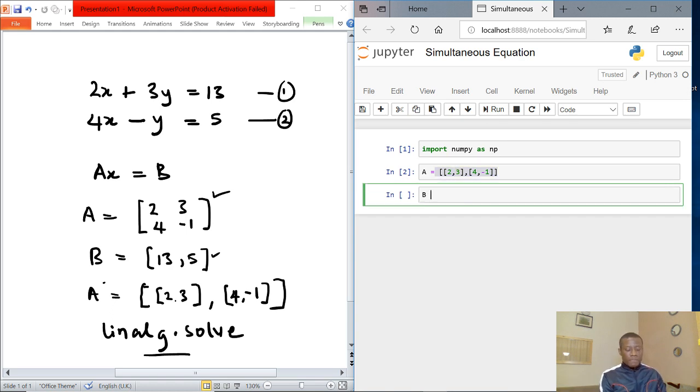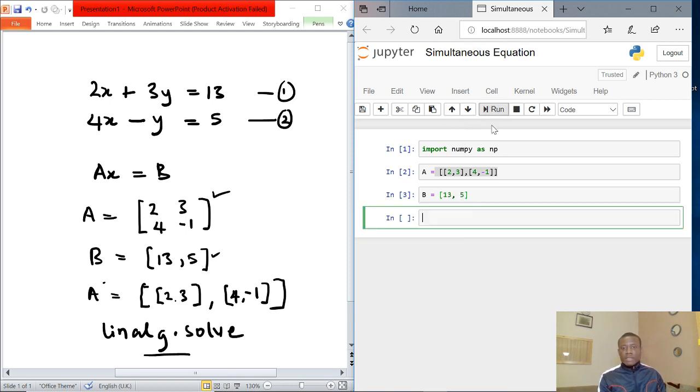And then for B we have 13 and 5. So [13, 5]. Also click on run and that is fine.